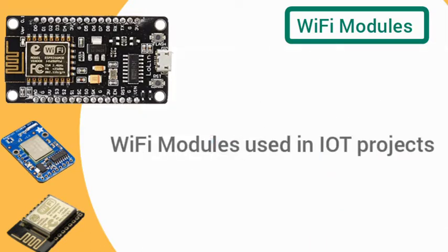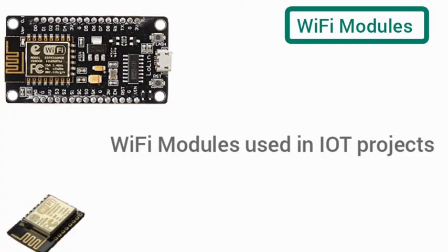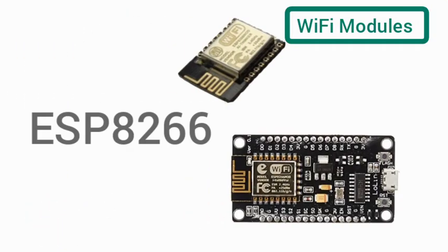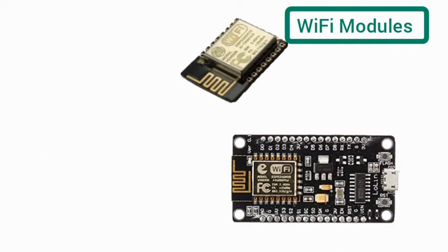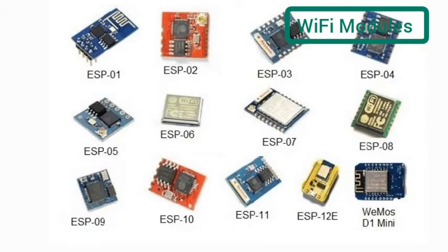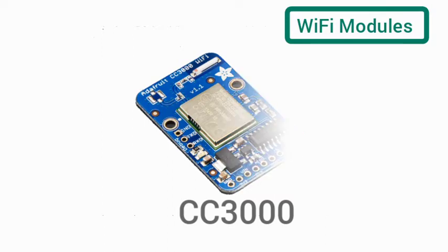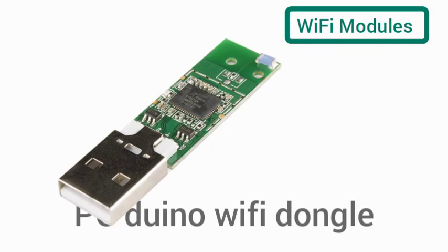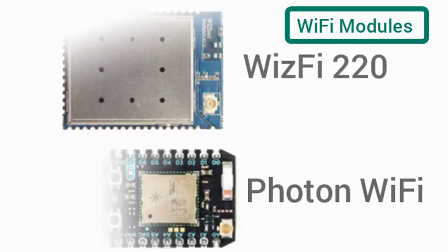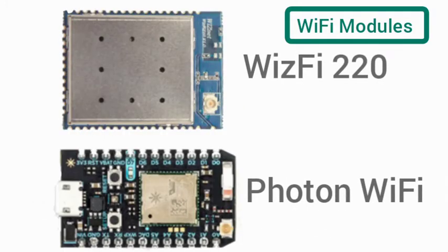Now let's see the different Wi-Fi modules mostly used in IoT projects. The first one is the ESP8266, which is mostly used in different IoT projects and has many versions. The second one is the CC3000 by Texas Instruments, also a very commonly used Wi-Fi module. The third one is the PCDuino Wi-Fi dongle, which has an inbuilt USB port to simply connect with devices through USB. The remaining two modules — WiFi220 and Photon Wi-Fi — you can see on the screen. These are the different modules mostly used in IoT.